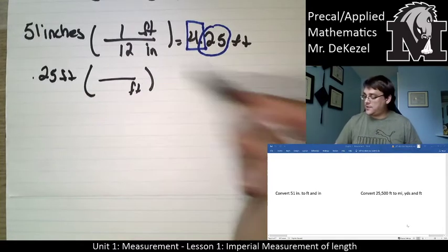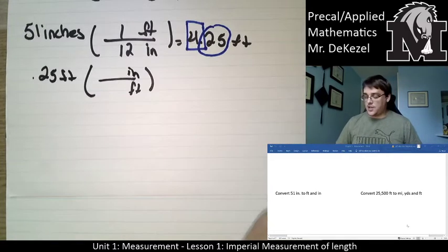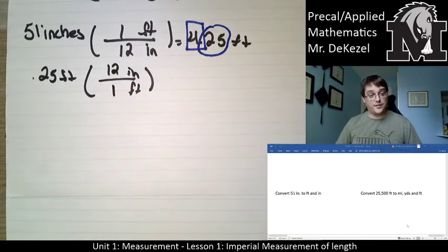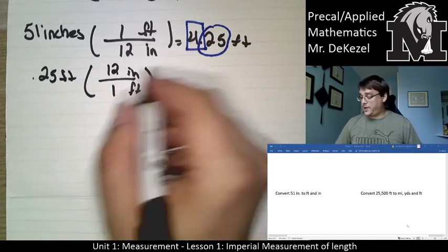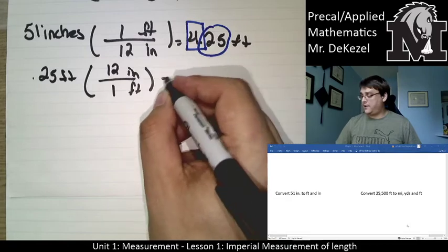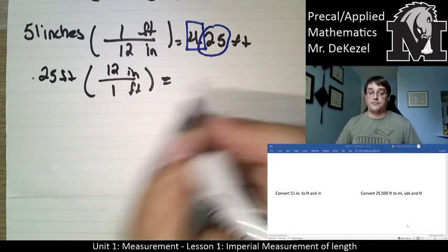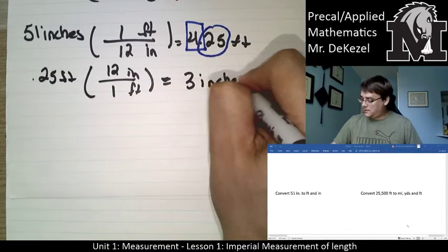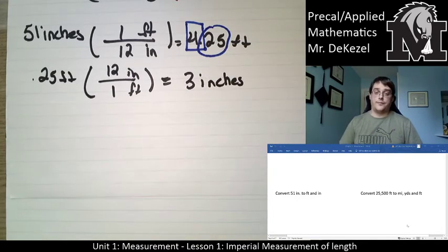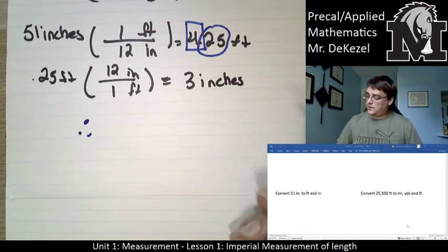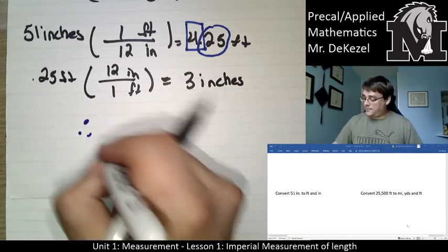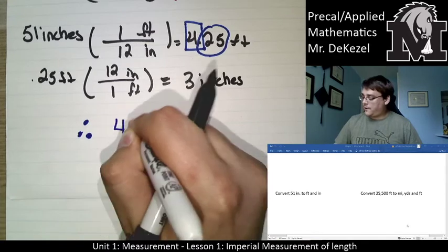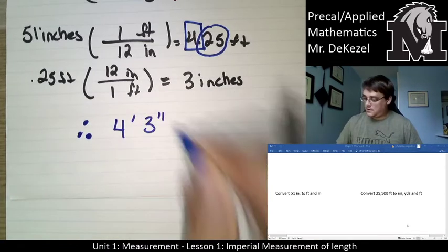Feet goes on the bottom, inches goes on the top — there are 12 inches in one foot. So we multiply 0.25 by 12. A quarter of 12 is 3, so that is 3 inches. Therefore, our answer — three dots meaning 'therefore' if you haven't seen that before — would be 4 feet 3 inches.